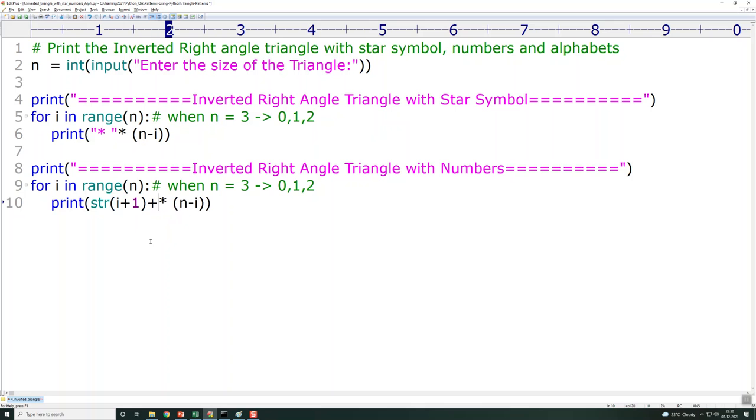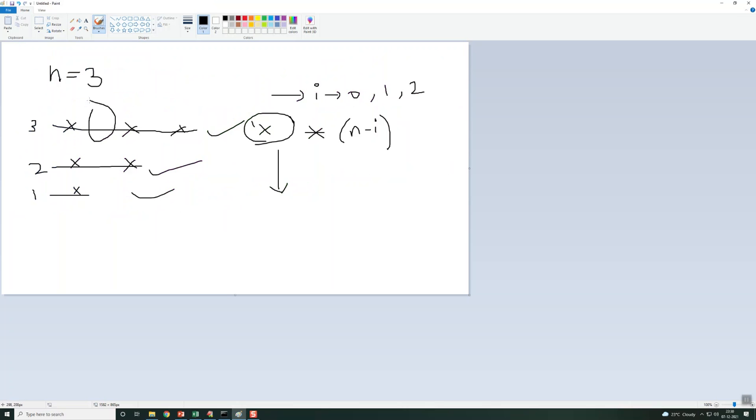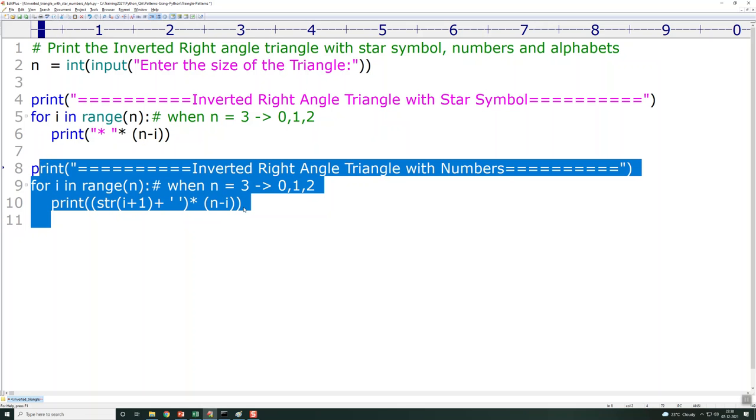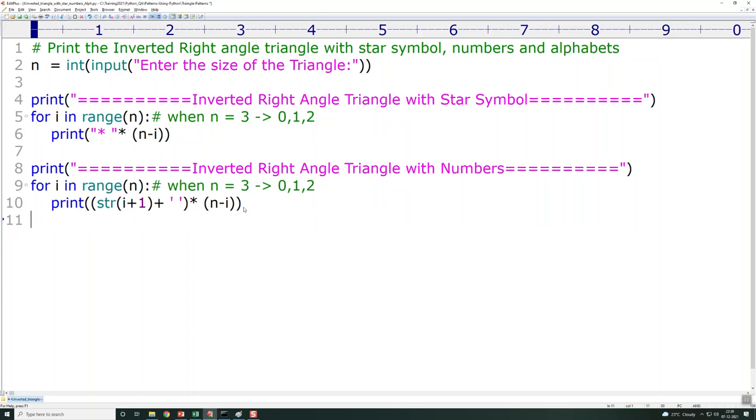I will be converting this to string: string of i plus 1, plus the space in between. Let's see if I've bundled all this in proper parentheses. This entire thing will be multiplied by n minus i times. That gives us the numbers. Let's do the same thing for alphabets.